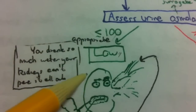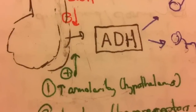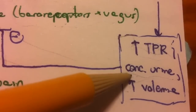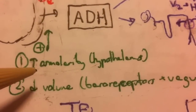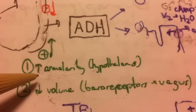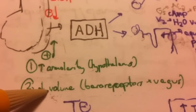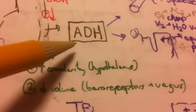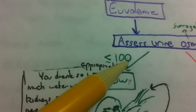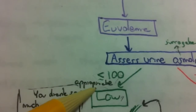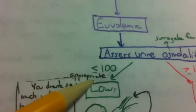If ADH is low, this is appropriate — because osmolality is low. In the face of low osmolality, ADH should not be released, unless we have hypovolemia to override that. So it is appropriate for ADH to be low in the setting of euvolemic hyponatremia.